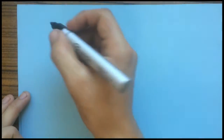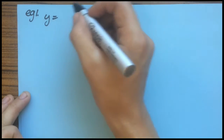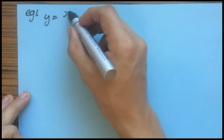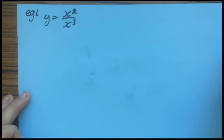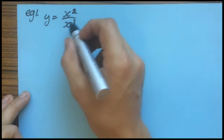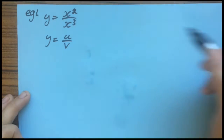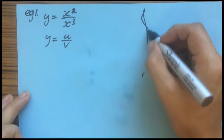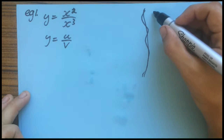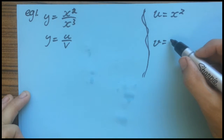So, example one. You have Y and it equals X squared over X to the power of 3, or X cubed. That looks a lot like Y equals U over V — a function over a function. So let's write that down the side and separate. Let's say that U equals X squared, and V equals X cubed.